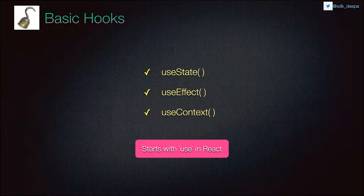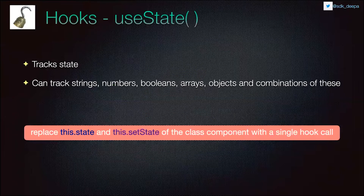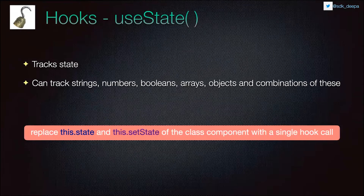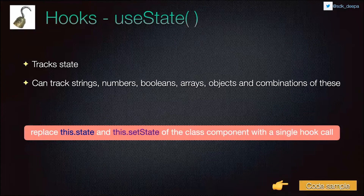There are three basic hooks in React: useState, useEffect, and useContext. Whenever you see something with 'use' in React, it refers to a hook. useState, as the name suggests, tracks the state of a functional component and is used to re-render the UI when data changes. It can track strings, numbers, or a combination. useState essentially replaces 'this.state' and 'this.setState' of a class component with a single hook call. To use useState, you need to import it along with React.